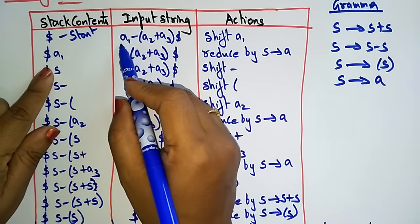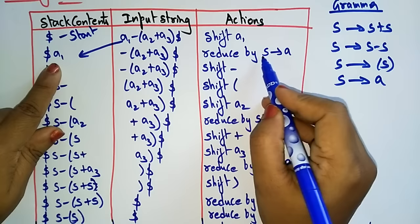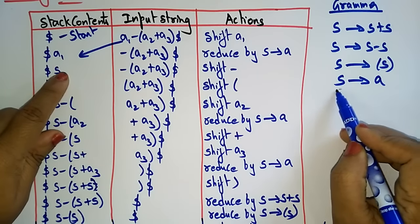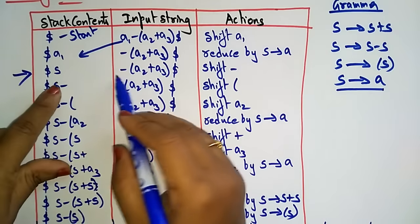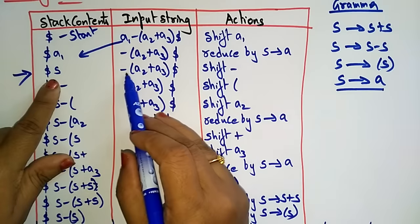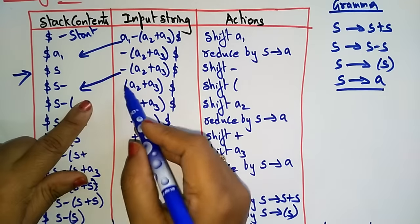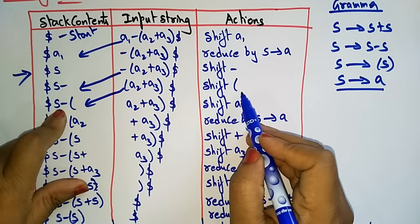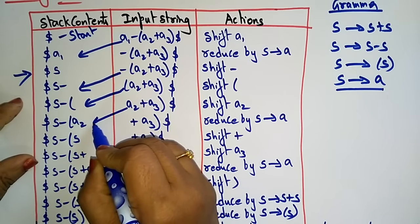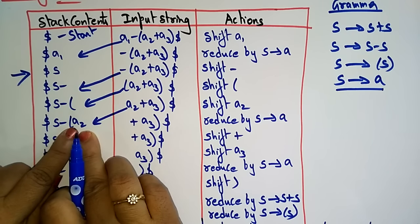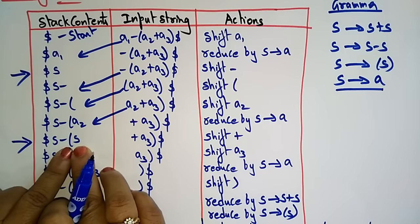First, shift a1 onto the stack — the stack now contains dollar a1, and the input contains minus a2 plus a3 dollar. Then reduce by S → a: since S is just a, replace a1 with S. Now shift minus onto the stack — the stack contains dollar S minus, and the input is a2 plus a3 dollar. Next, shift a2 onto the stack, giving dollar S minus a2.